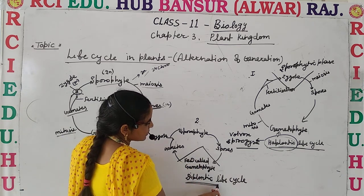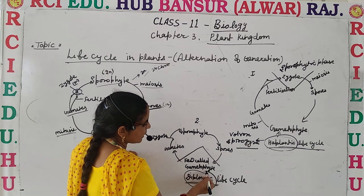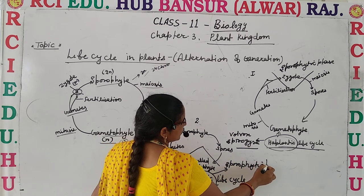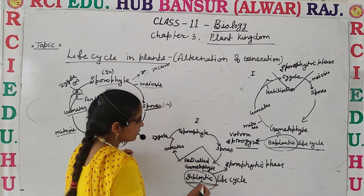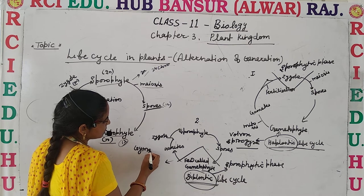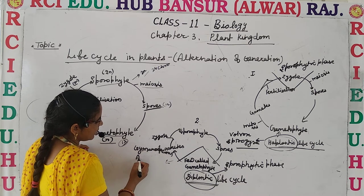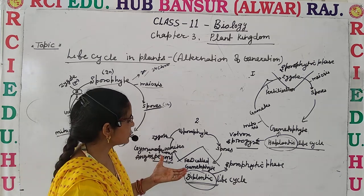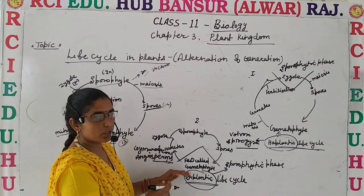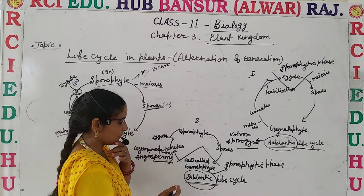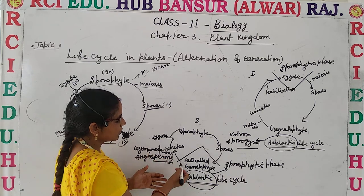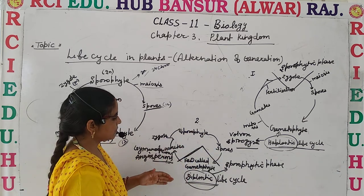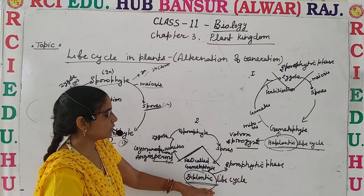Now let's discuss another one — the diplontic life cycle. As the name suggests, in the diplontic life cycle the dominant phase of the plant is the sporophytic phase, which means it is diploid. This type of phase is mainly present in gymnosperms and angiosperms.